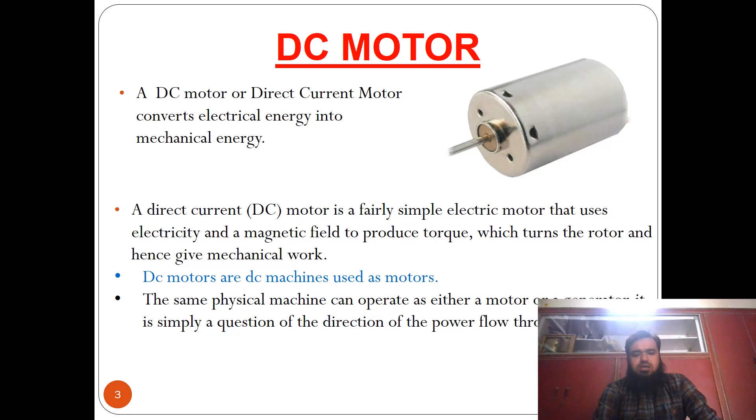DC motors and DC generators can be converted from one to the other. For DC machines, if power is being supplied to the machine, it is known as a DC motor. If power is being extracted from the machine, it is a DC generator.